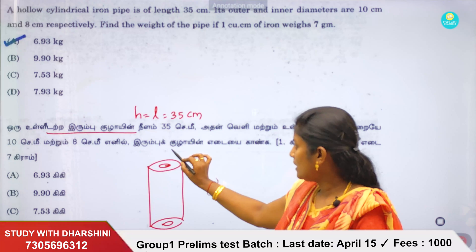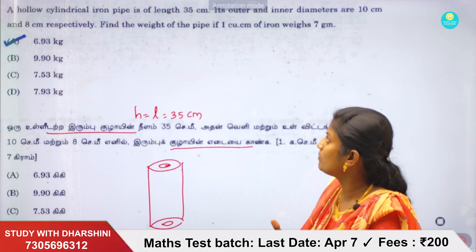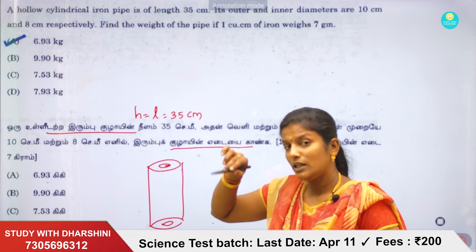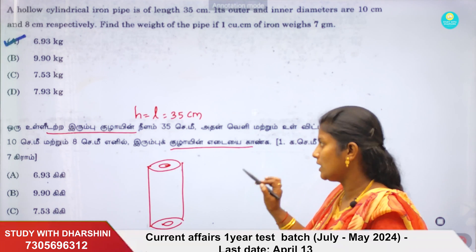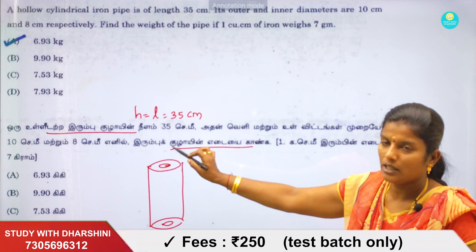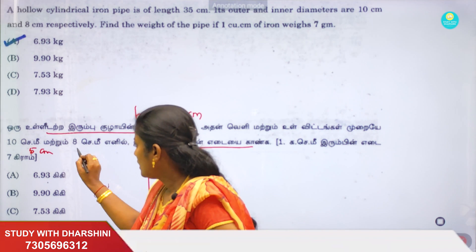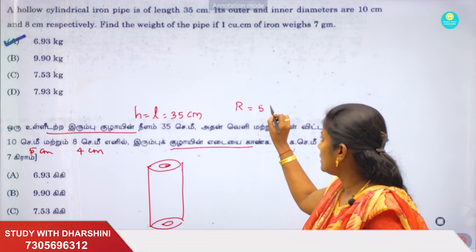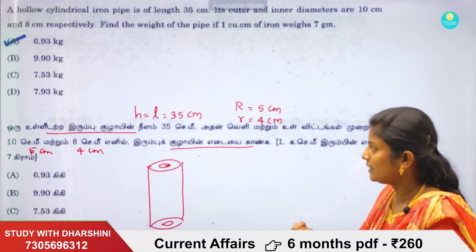We will now solve for volume and capacity. The outer radius capital R is 5 cm and the inner radius small r is 4 cm. These are the outer and inner radii of the hemispherical shell.